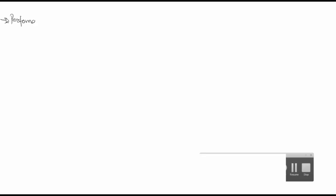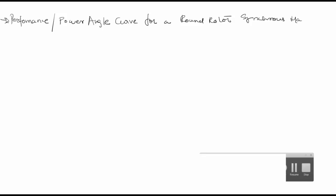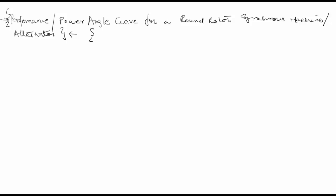In this video, I will talk about the performance or the power angle curve for a round rotor synchronous machine or alternator. In the last lecture we derived the approximate equivalent circuit. This power angle curve which I am going to present here is based on that approximate equivalent circuit.